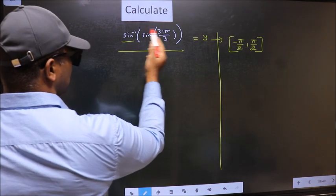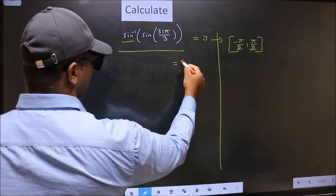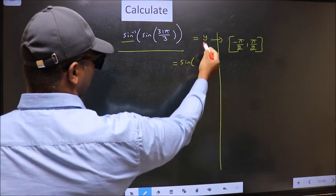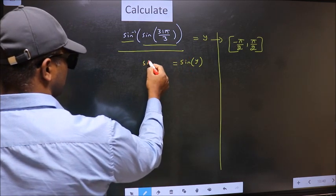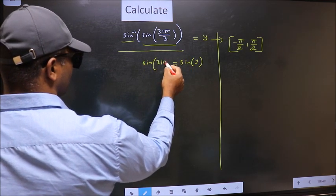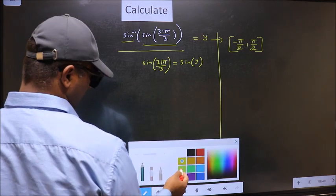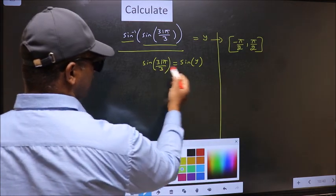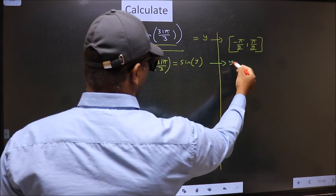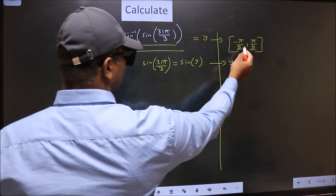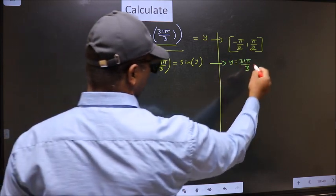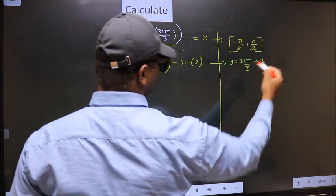I shift sin inverse to the other side. It will become sin of y, and this no change. Now comparing both sides, we get y to be 31π by 3. Does this lie in this interval? No. So we should reject this answer.